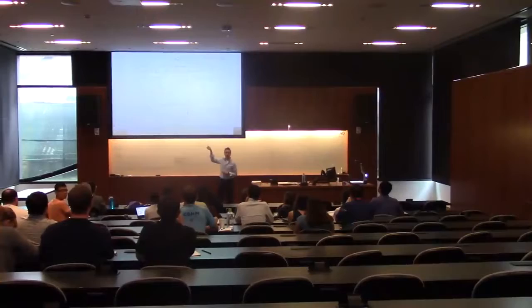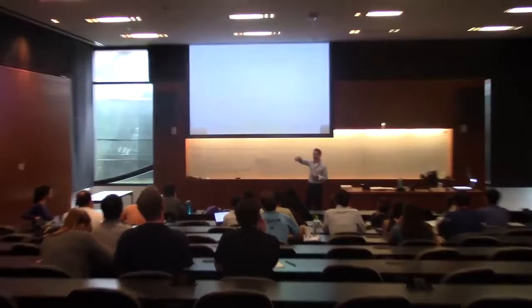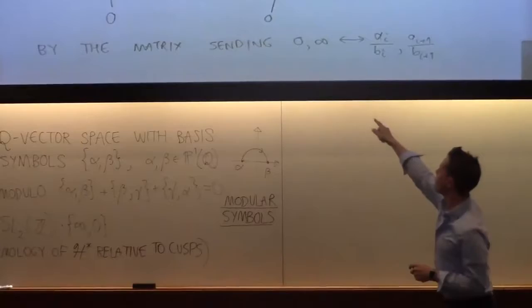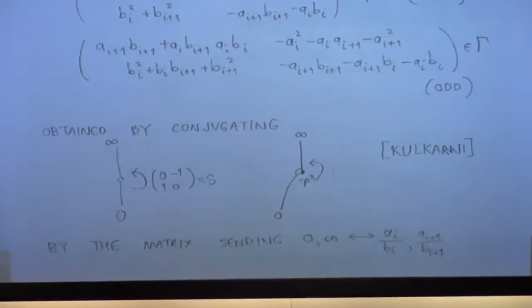And you have to check, so you conjugate that matrix, either the one that rotates the side or the one that does the element of order 3. When you conjugate to get 0 infinity to match the A_i, B_i, A_{i+1}, B_{i+1}, then you end up with those matrices. So there's your formula, just like in the free case, to check.